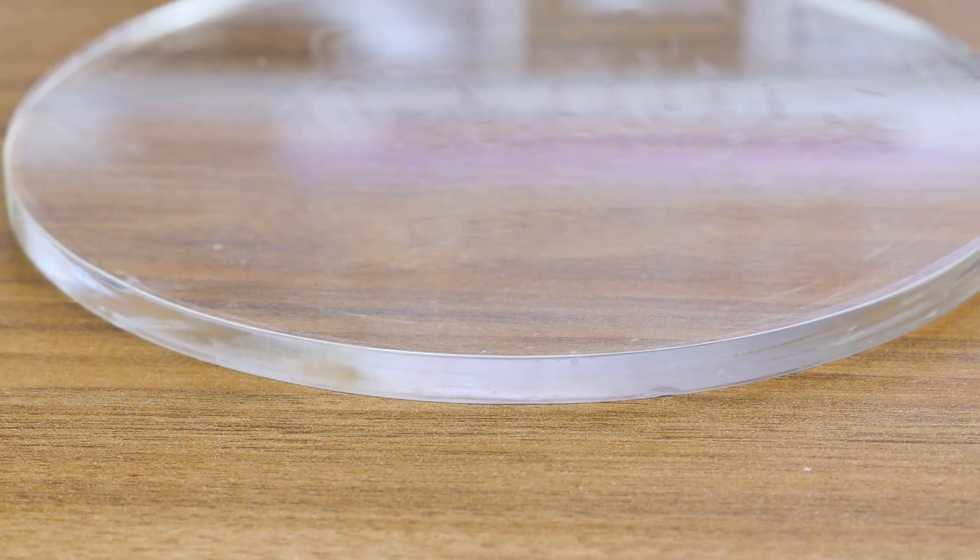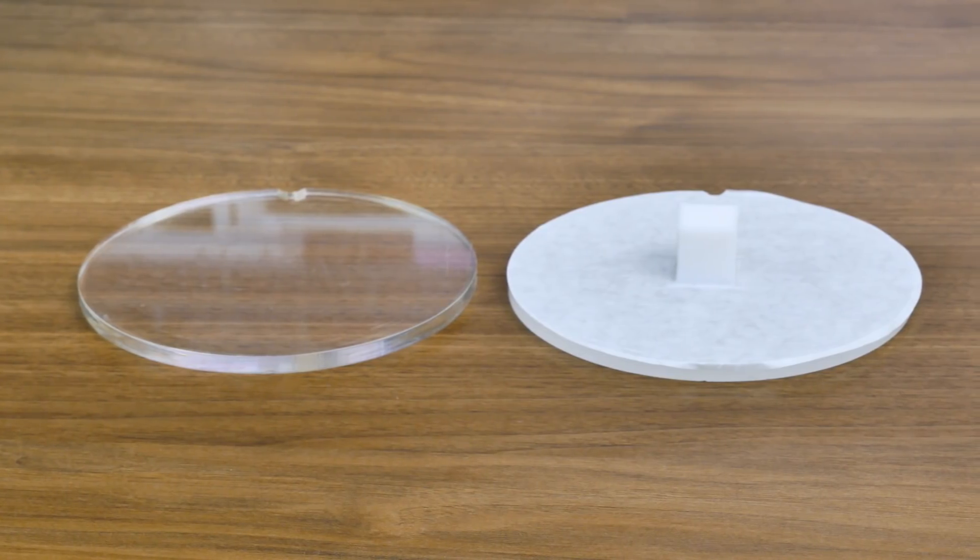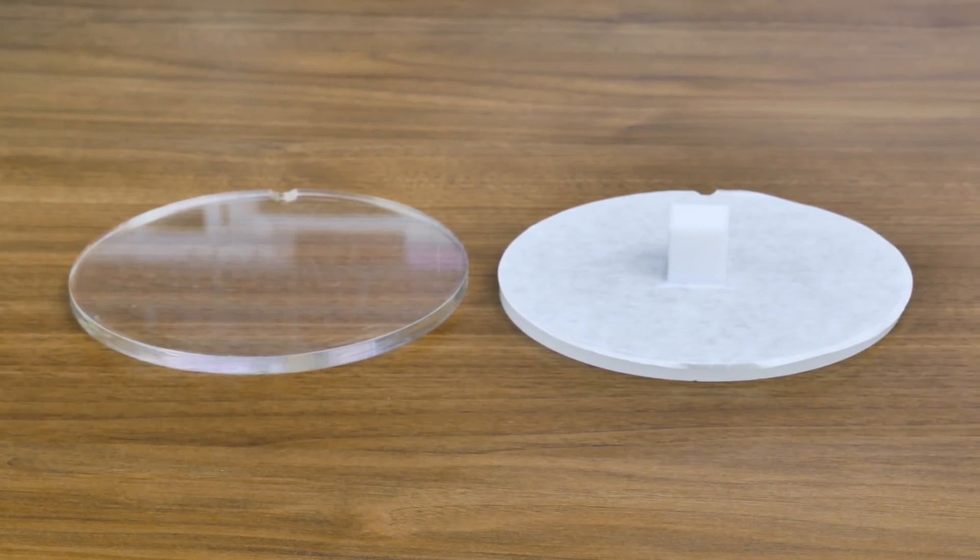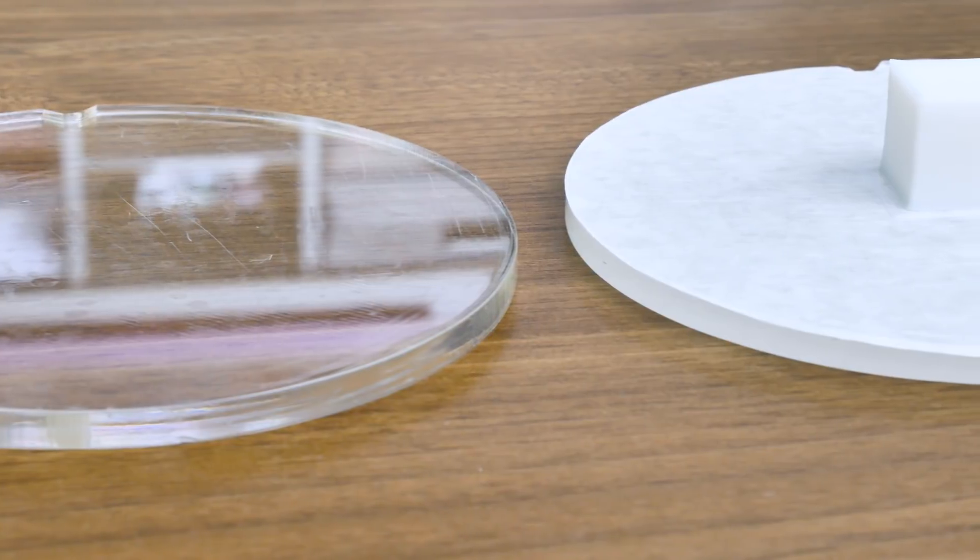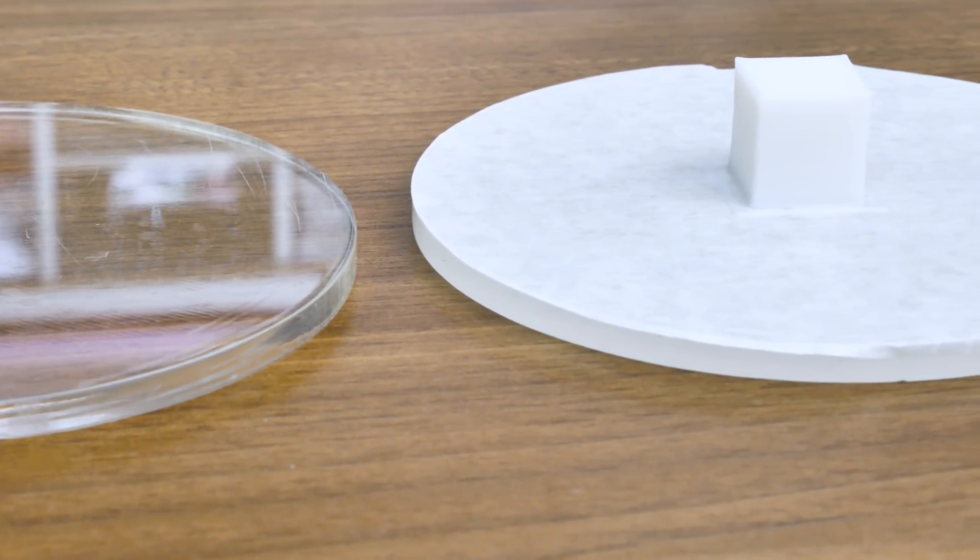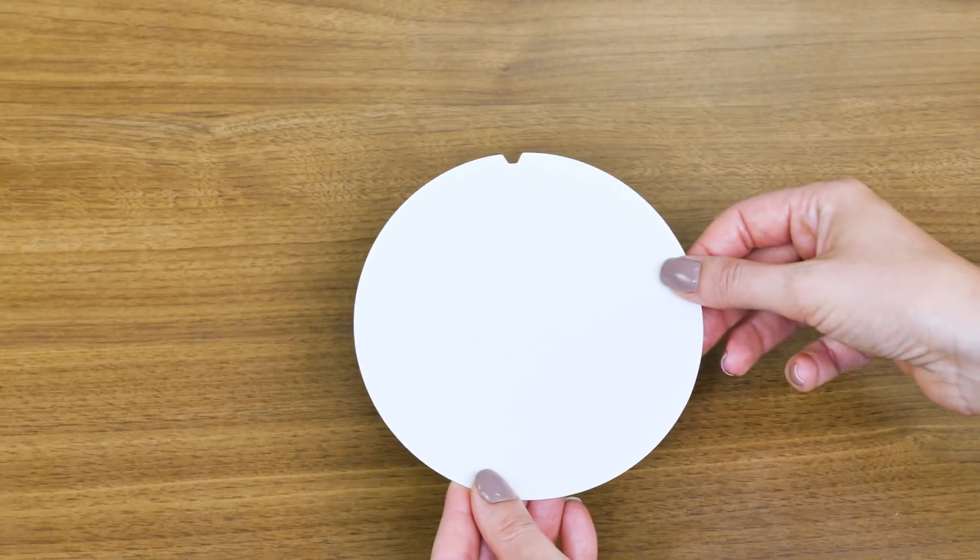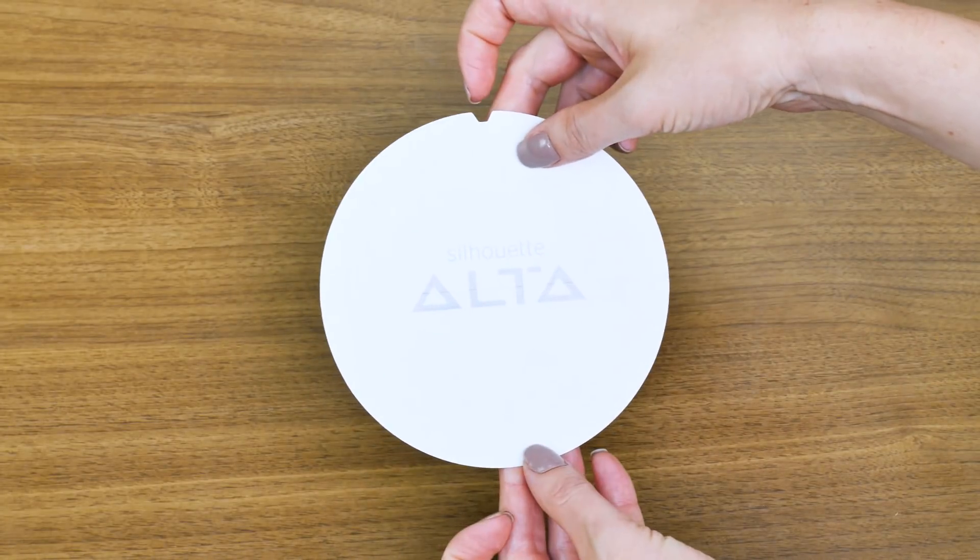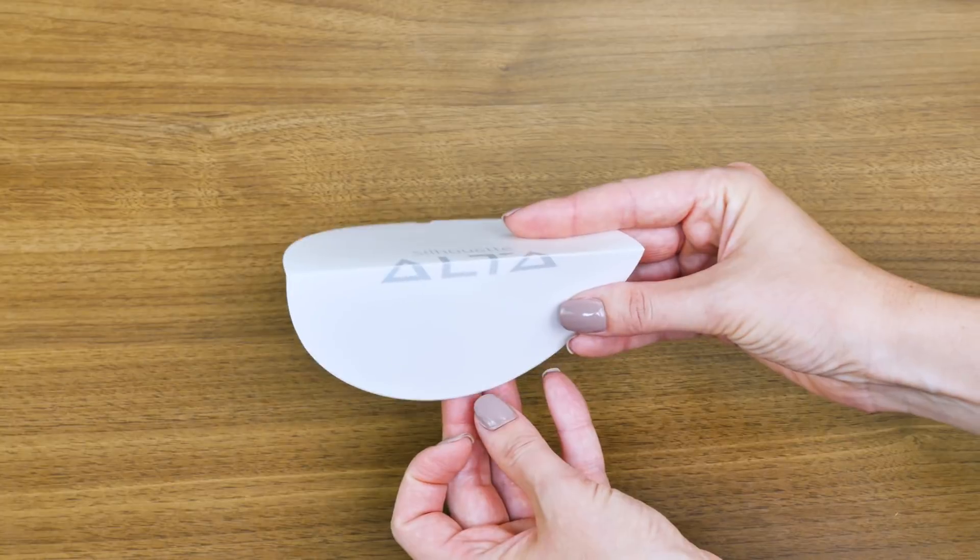So it's important that you prepare it. Using platform tape protects the platform and helps the filament to adhere properly. The liner for the platform tape is perforated down the middle to make it easier to apply.